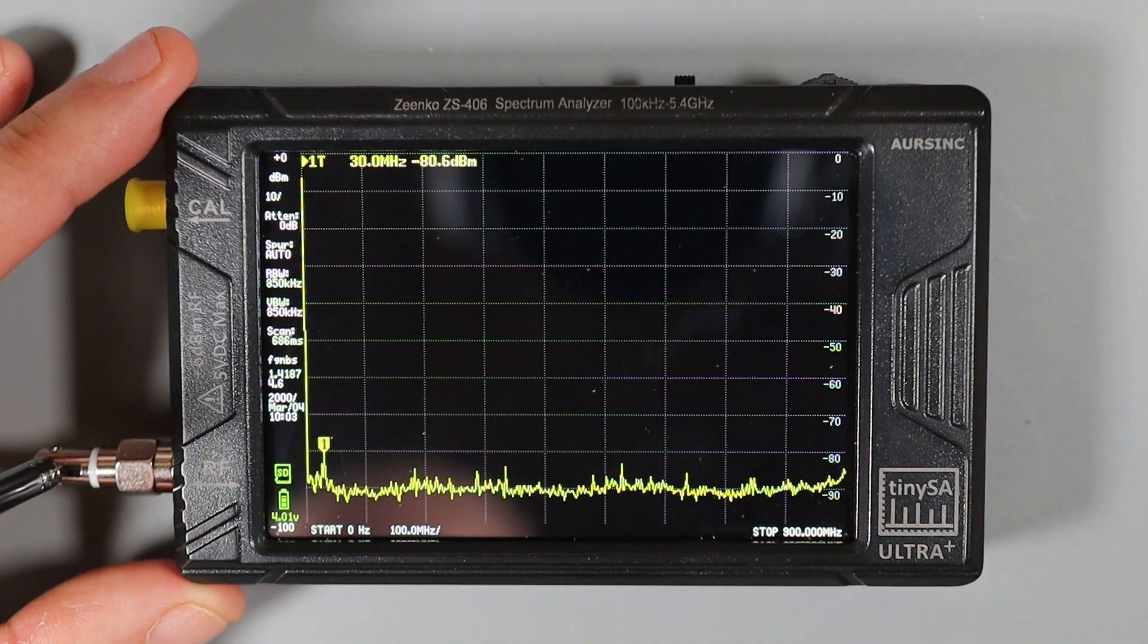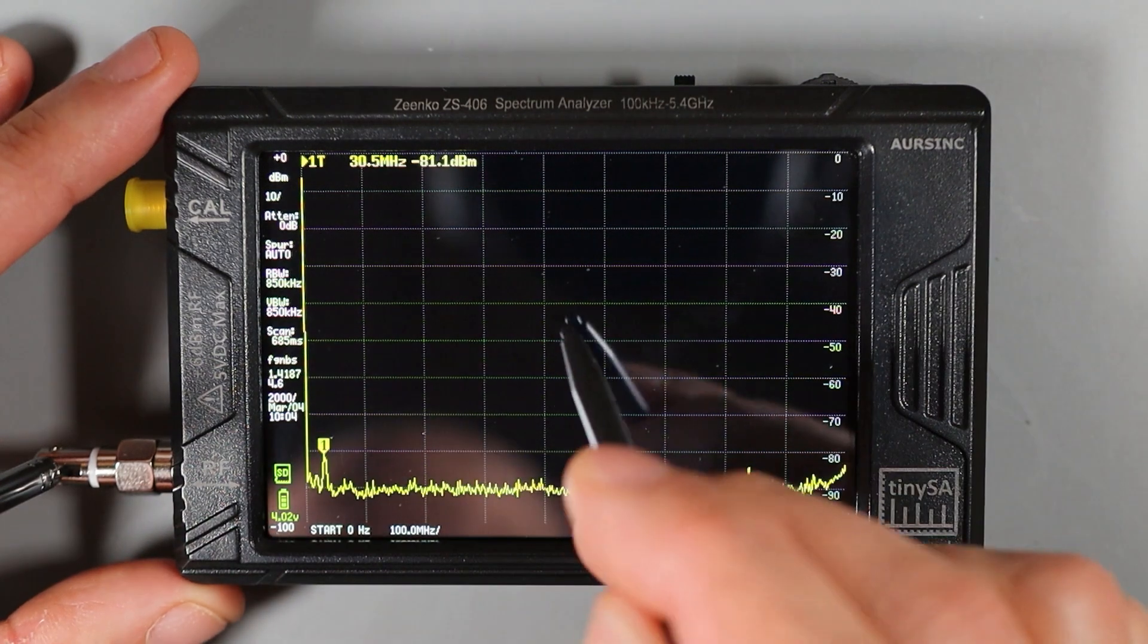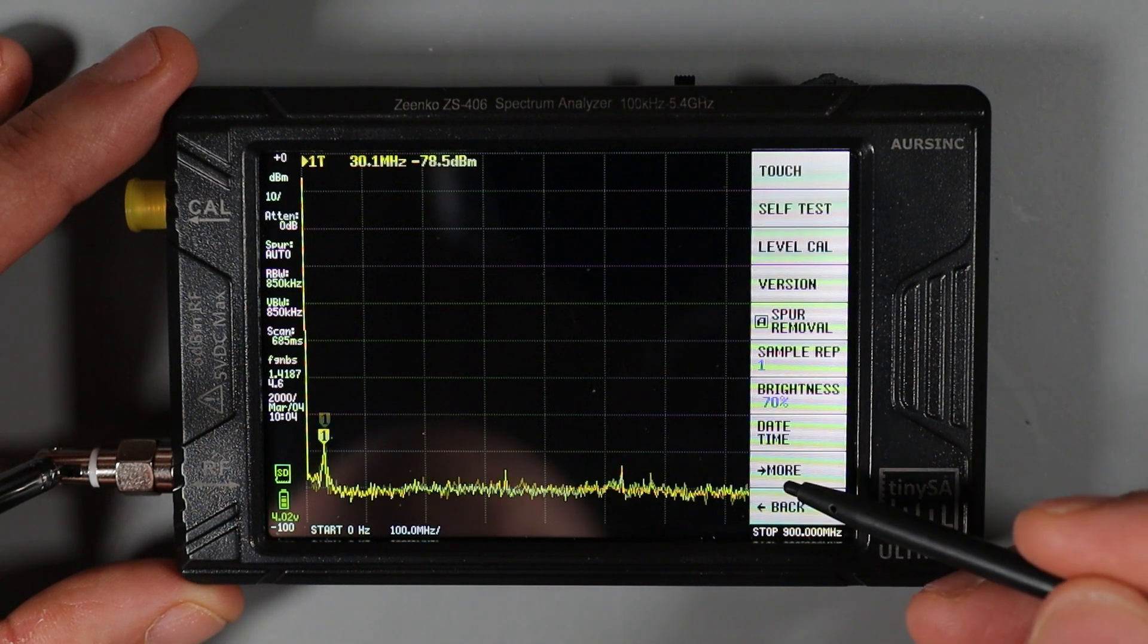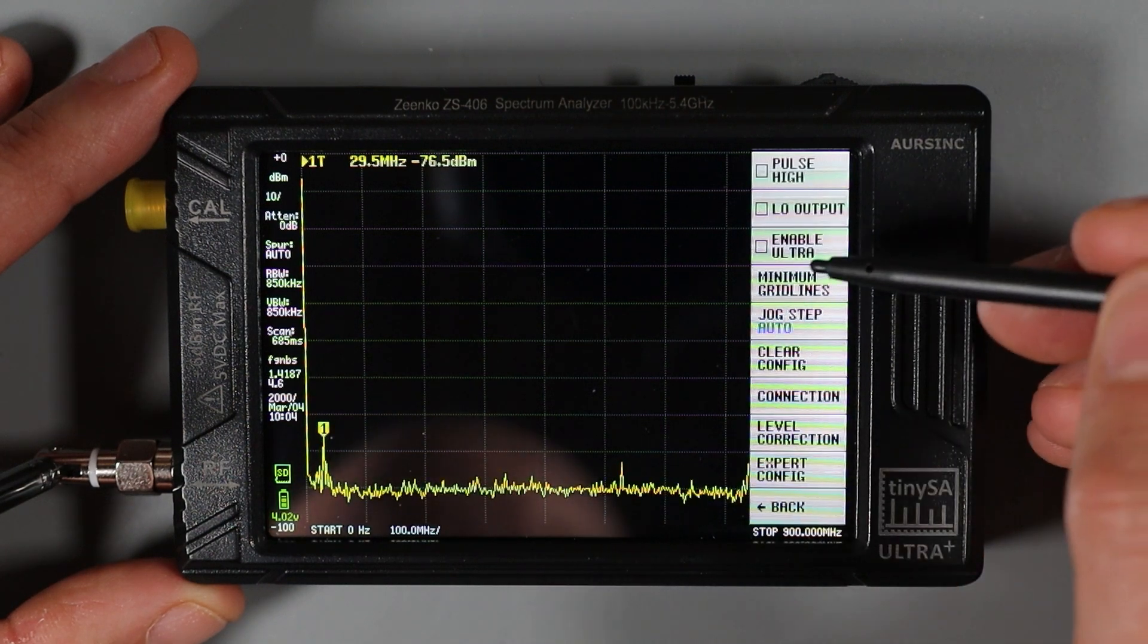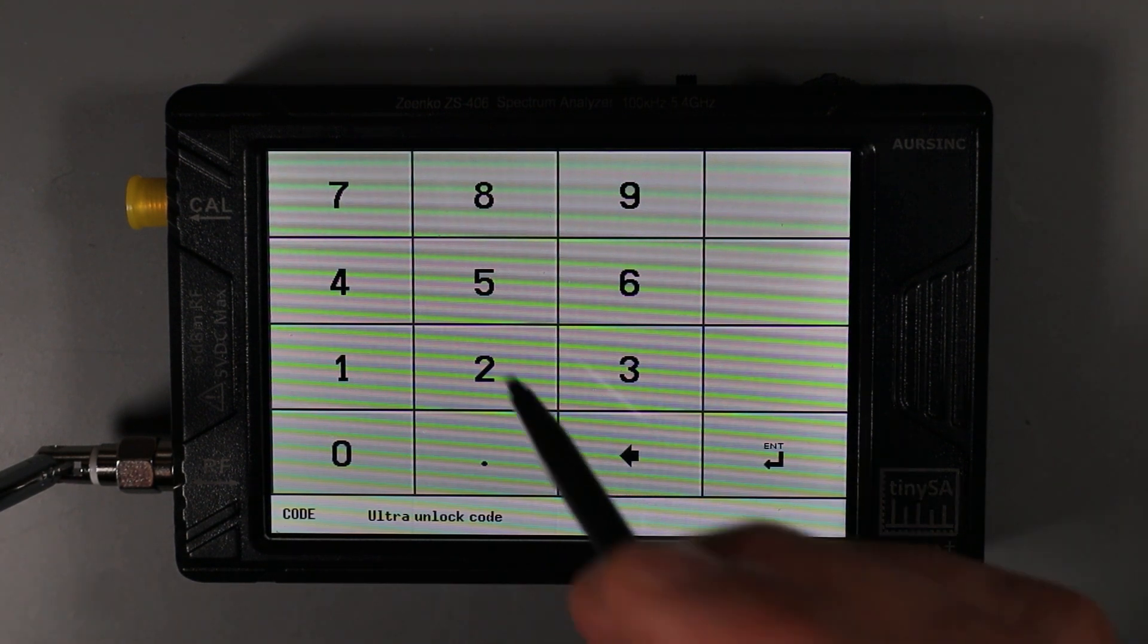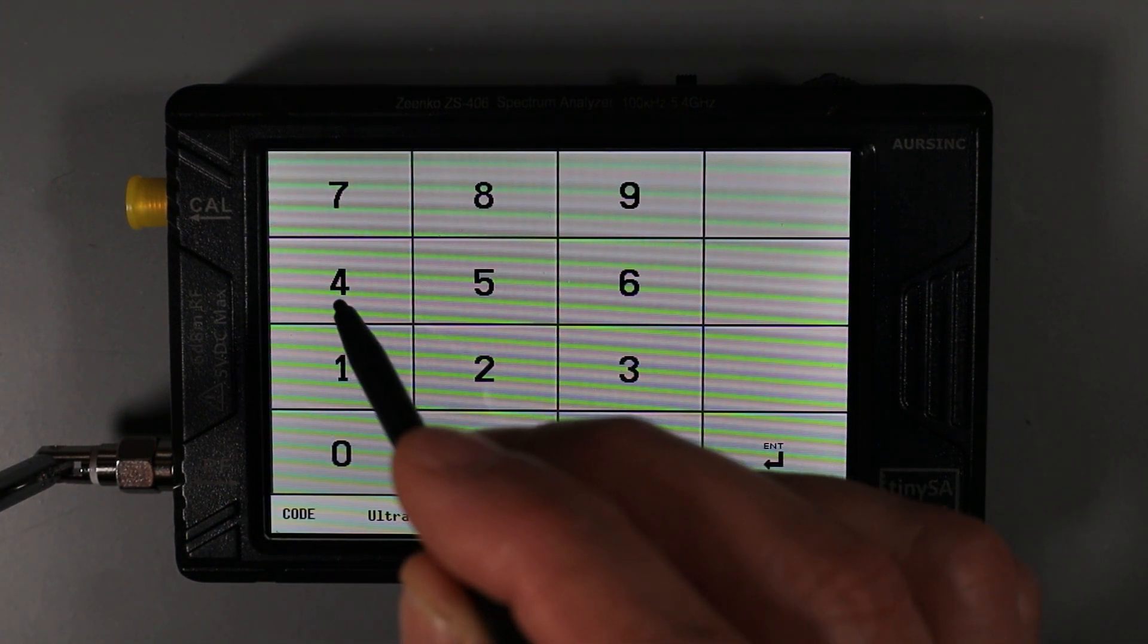If we want to look at signals greater than 900 megahertz, we need to go in and enable ultra mode. To do that, I'm going to go to the top level menu and choose config and then choose more. And then from here I can just click enable ultra. Before entering ultra mode, this warning dialog pops up to let us know that we need the password in order to enable it. I've gone to the TinySA website and I've gotten that password, so I will enter it now.